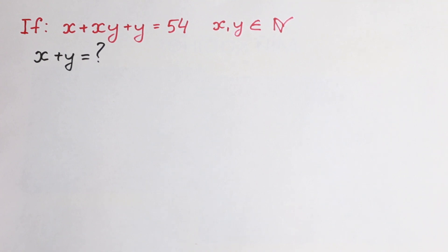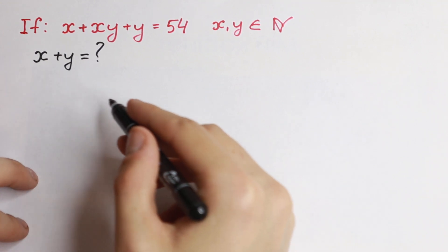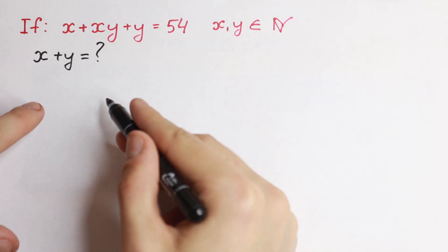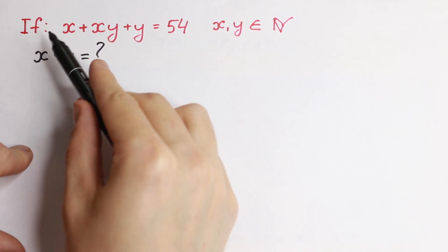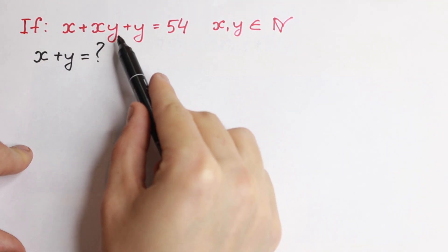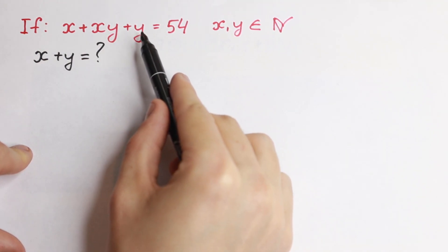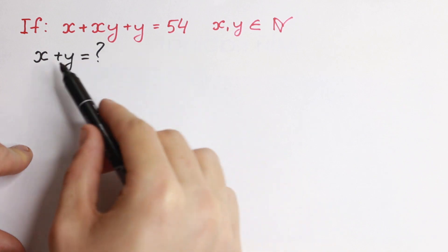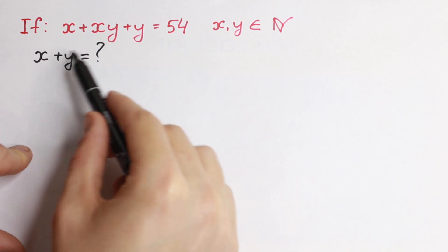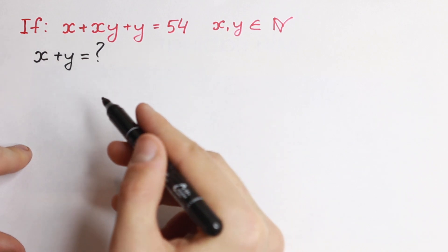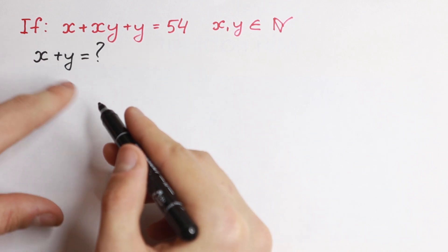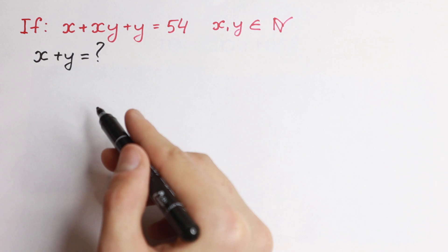Hello everyone and welcome back to higher mathematics. In this video we are going to solve this interesting algebra problem. We know that x plus xy plus y equals 54, and we need to find the sum x plus y. How can we find this sum?